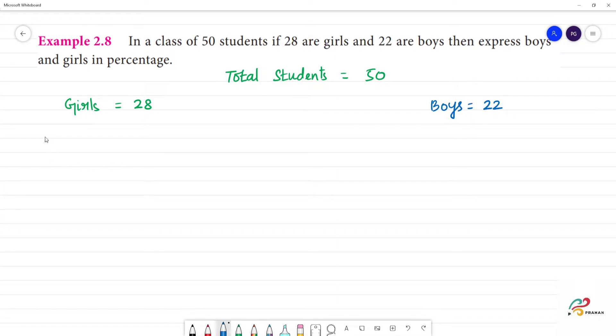What is the fraction? Fraction. What is number of girls by total number of students? 50. What is fraction boys? The total number of students is 50 and 22 are the boys.